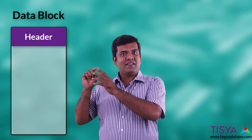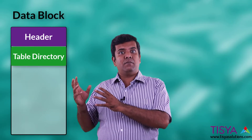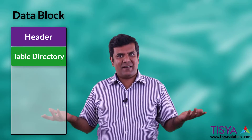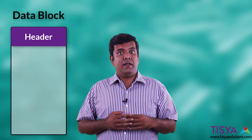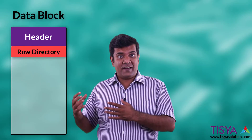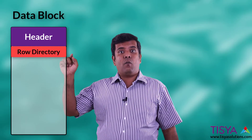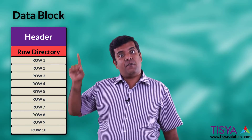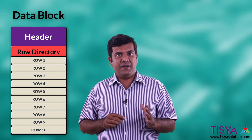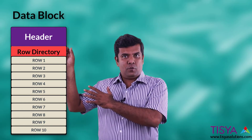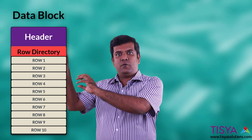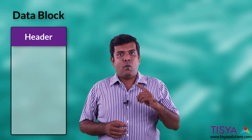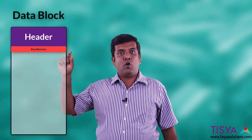Beyond the table header, if the segment is a table cluster, there is a table directory which tells what tables this block has data about. If it is not a table cluster, the table directory is not necessary. The next section is the row directory. The row directory is like an index of all the rows present inside the block. It has an ID for every row in the block, which is part of the row ID. Even if the row moves around, the ID doesn't change — it always knows which ID maps to which row.